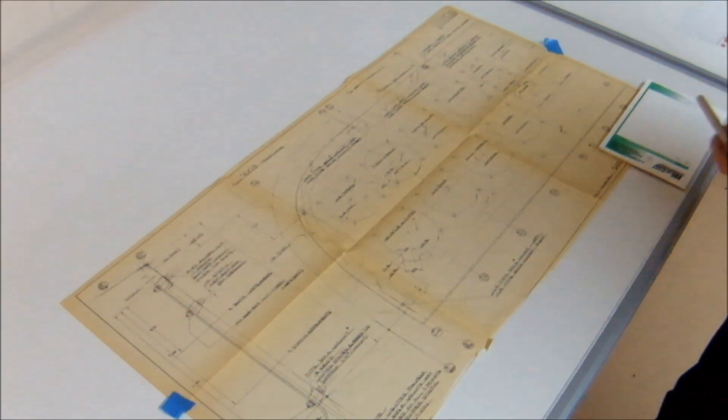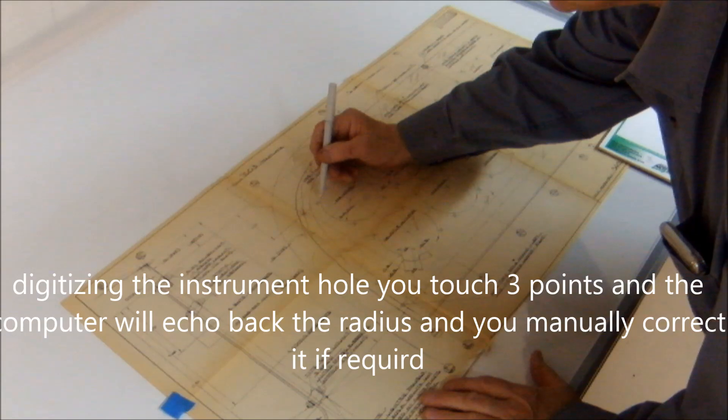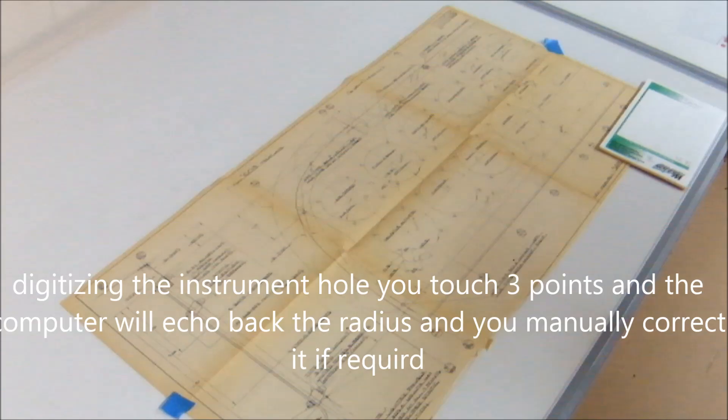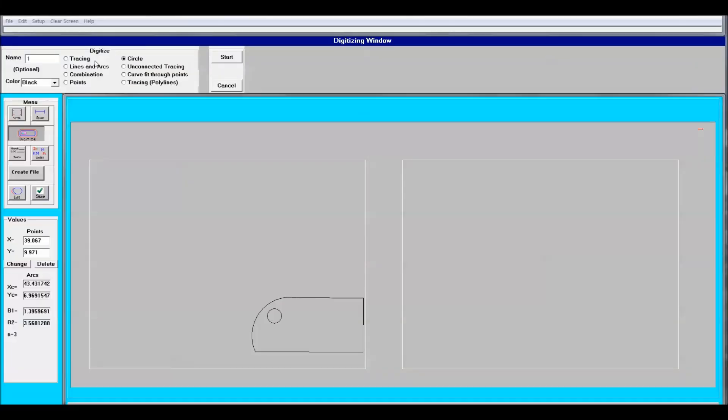Now we're going to be digitizing the instrument holes. And this is where you touch it three times and the computer echoes back the reading. This allows you to check the print for the radius value and correct it.